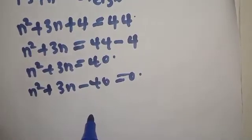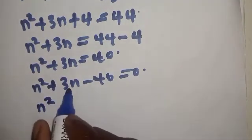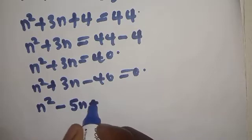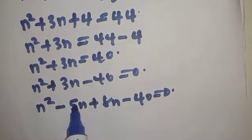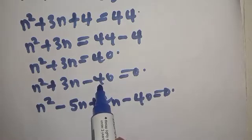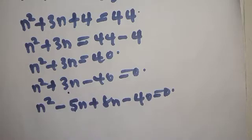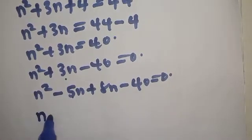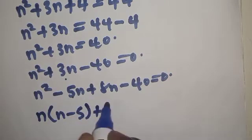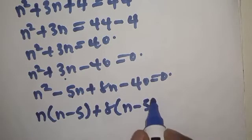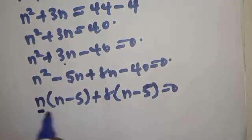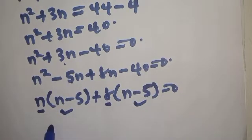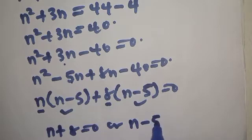Let's factorize. We have n squared minus 5n plus 8n minus 40 equals 0. Using the factorization method: minus 5 times 8 gives minus 40, and minus 5 plus 8 gives plus 3. So this can be written as n(n minus 5) plus 8(n minus 5) equals 0, giving us (n plus 8)(n minus 5) equals 0.